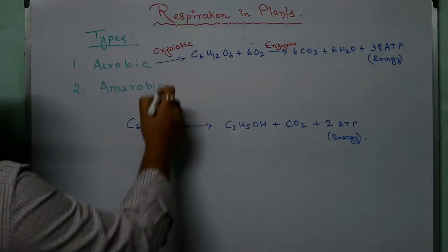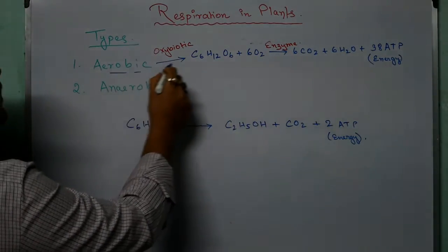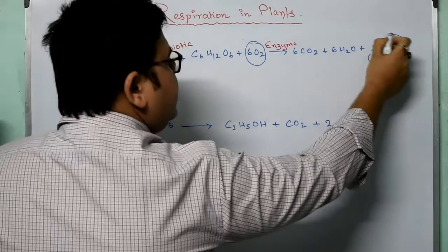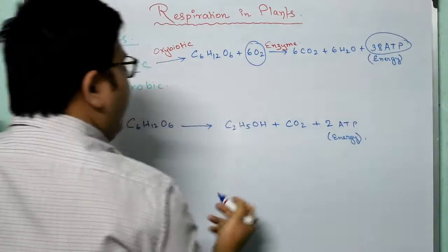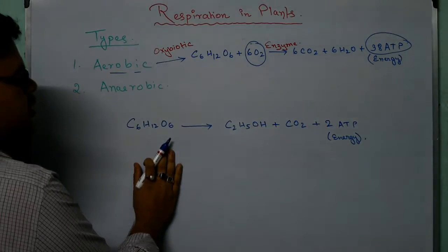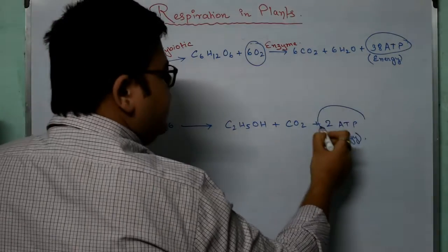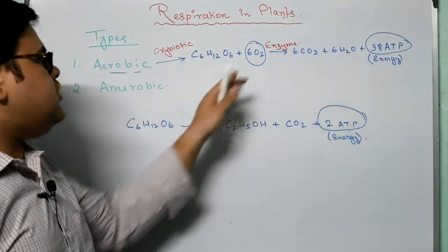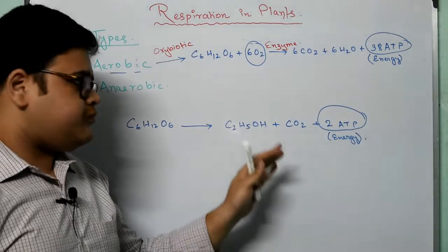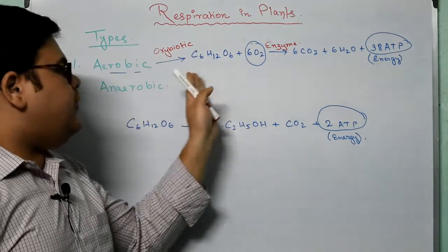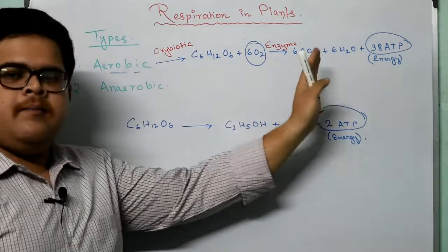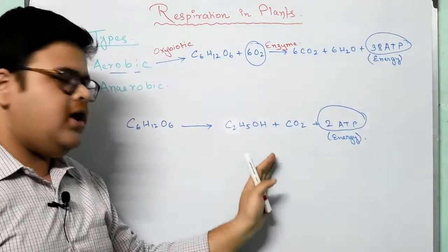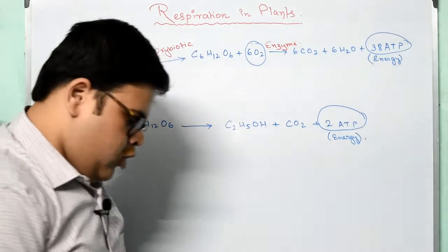We can see that in aerobic respiration, in the presence of oxygen, we get 38 ATP of energy, and without the presence of oxygen, we get only 2 ATP of energy. Thus we can easily conclude that in aerobic respiration we get a much greater amount of energy and in anaerobic respiration we get only a small amount of energy.